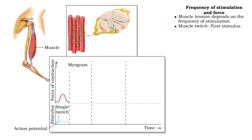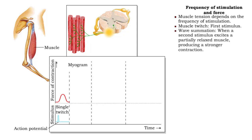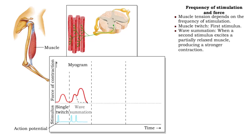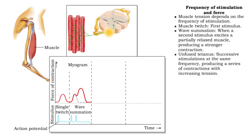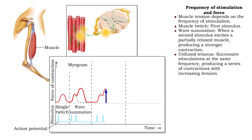When a second stimulus is applied before the muscle has time to completely relax from an initial contraction, it exhibits a stronger contraction. This is called wave summation. Successive stimulations at the same frequency will generate a series of contractions with increasing tension, producing a sawtooth tracing called unfused tetanus.